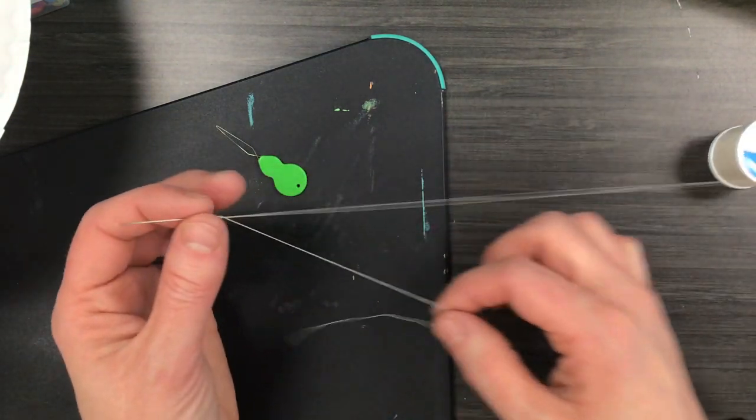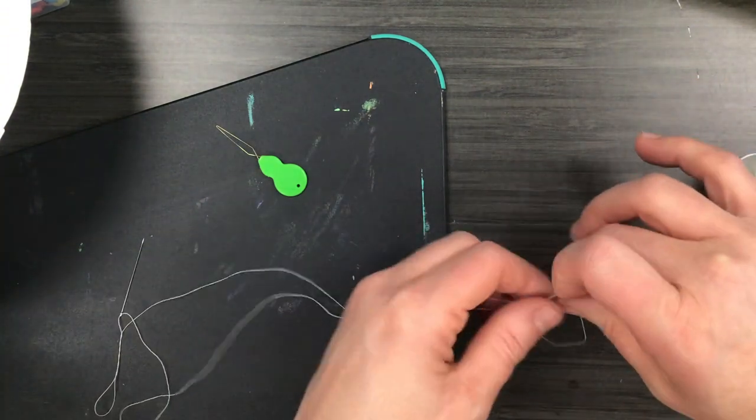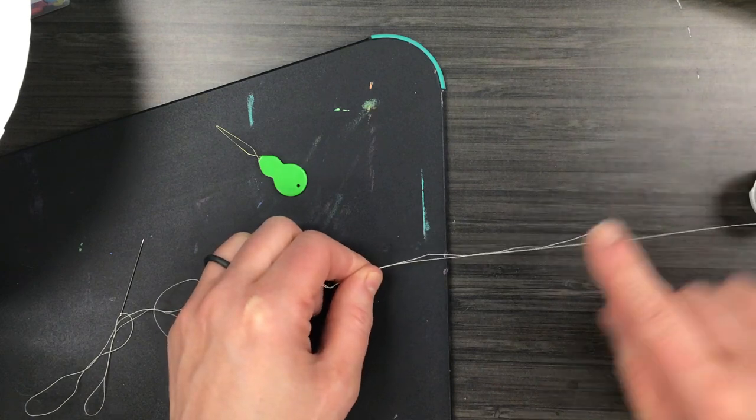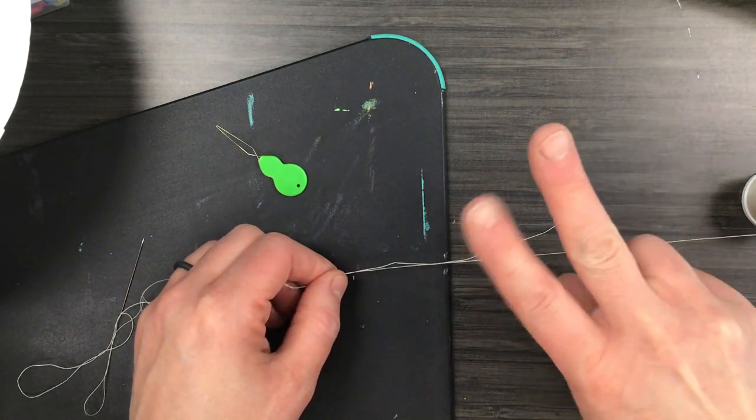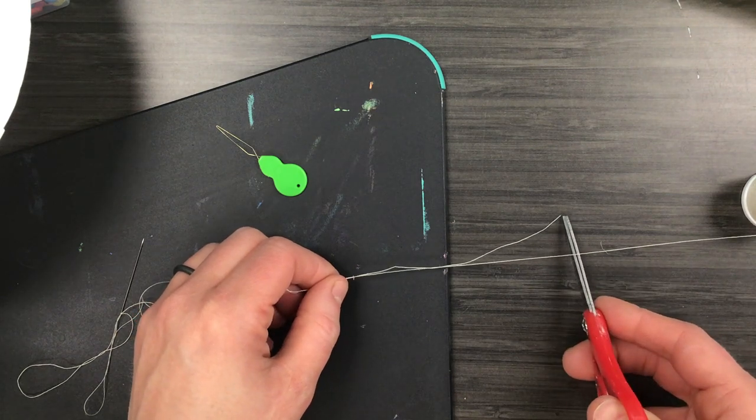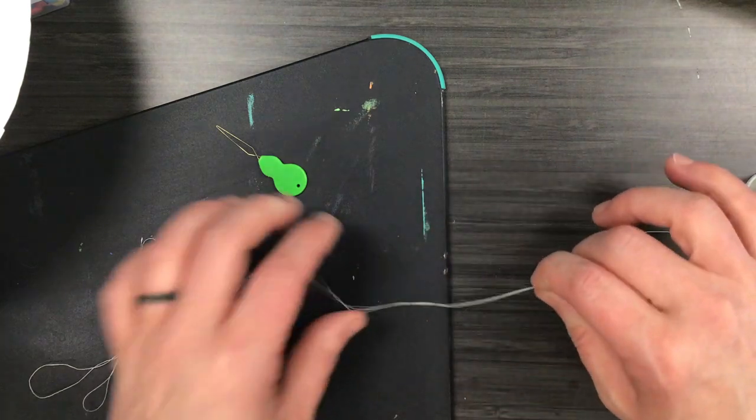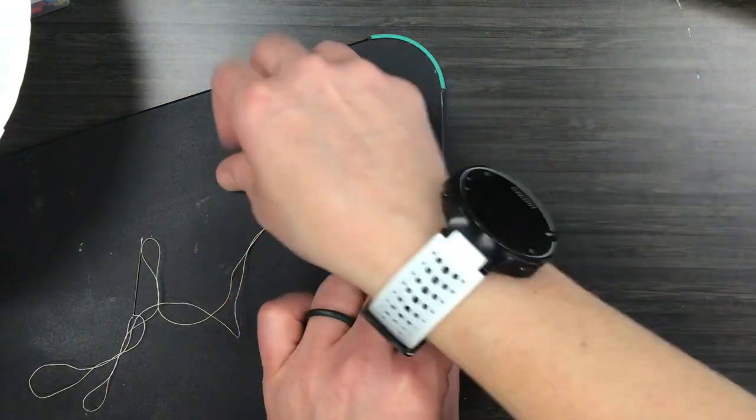What I need to do next is pull my string long. When you sew with thread it needs to be two pieces together. So I'm going to cut so they're the same length. And then I'm done. I'm going to set that aside.